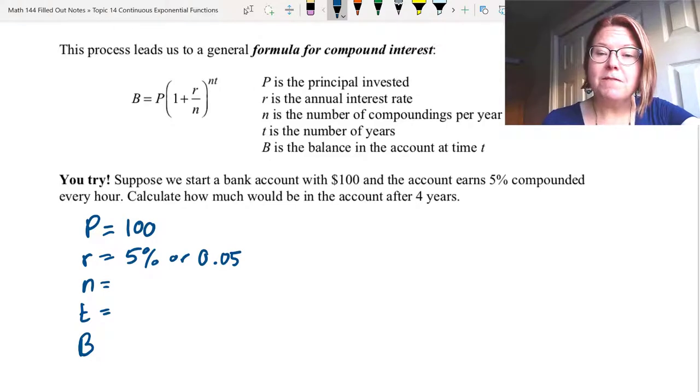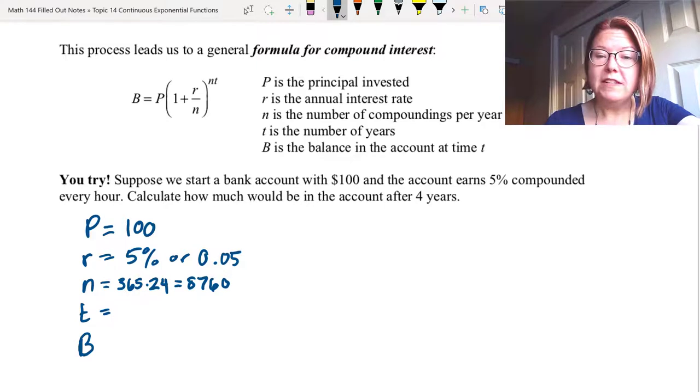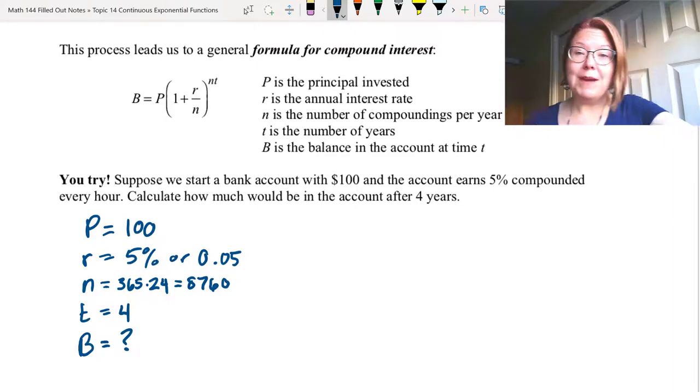n is the number of compoundings, and we're compounding every hour of the year. We need to start with 365 days in a year and then 24 hours in each of those days. So that would be 365 times 24, which is 8,760 for our n value. We're going to do this compounding for four years, which makes t equal to 4. And the question is, what's the balance at the end of it? So the balance is the unknown part.